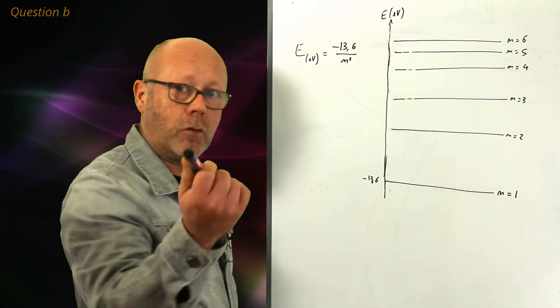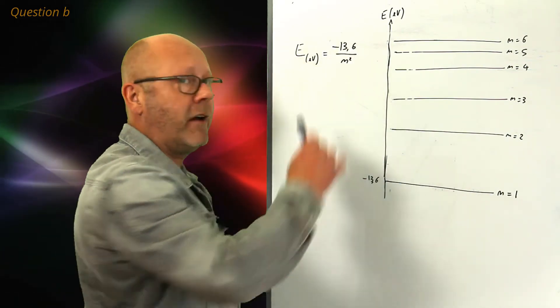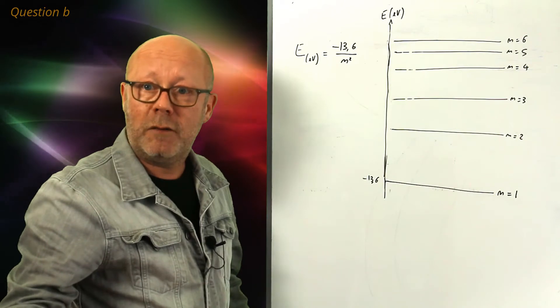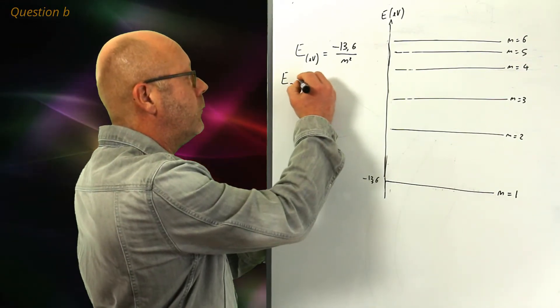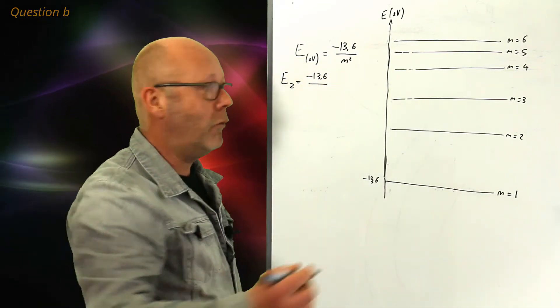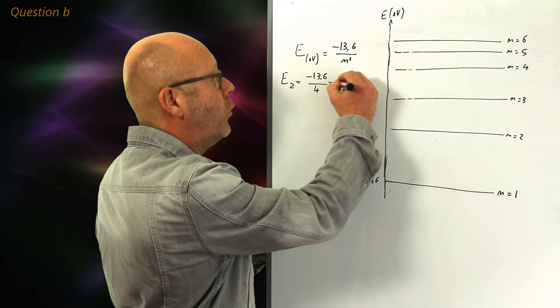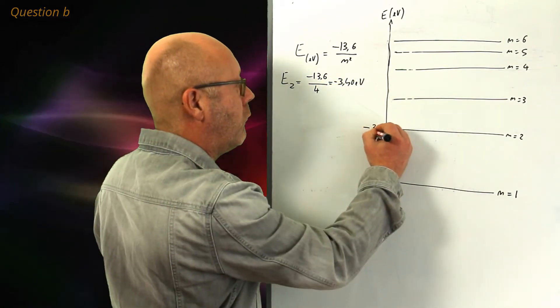So, we got the first one, and you see that for n equals 1, minus 13.6 divided by 1 squared is minus 13.6 electron volts. We can find the second one, minus 13.6 divided by 2 squared, so 4, and that gives you minus 3.40 electron volts that you can put on the ground.